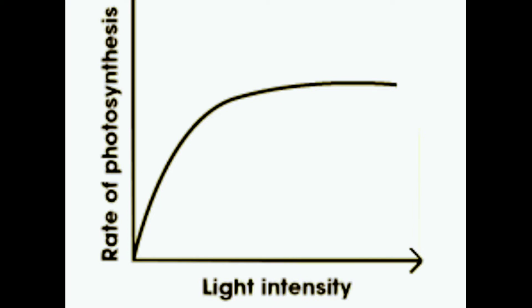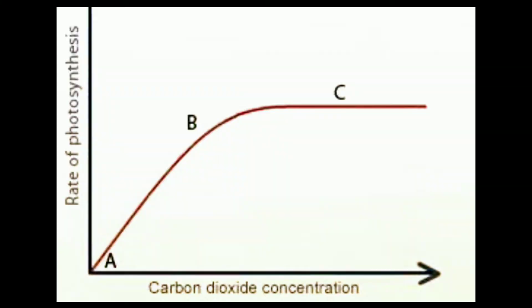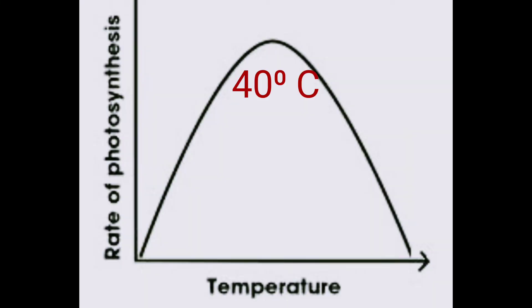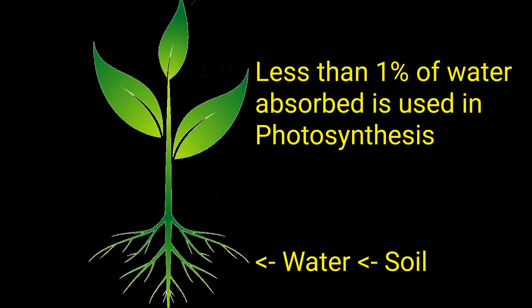In case of light intensity, the rate of photosynthesis increases linearly with the increase in intensity of light. However, extremely high intensities of light do not increase the rate of photosynthesis. In case of carbon dioxide concentration, the rate of photosynthesis increases with an increase in carbon dioxide concentration. In case of temperature, the rate of photosynthesis increases with increase in temperature up to 40 degrees centigrade; above this temperature there is a decrease in the rate. Even low temperatures inhibit the rate of photosynthesis. In case of water, water rarely becomes a limiting factor because less than 1% of the water absorbed by the plant is actually used for photosynthesis.